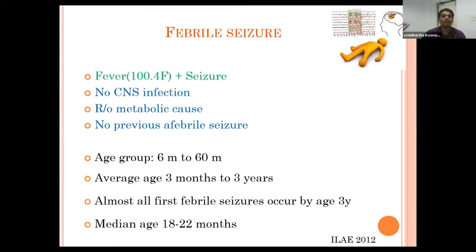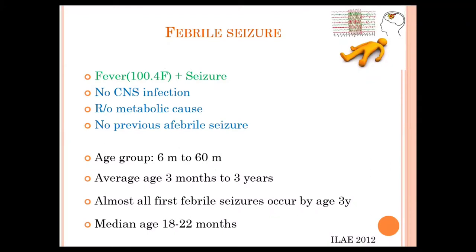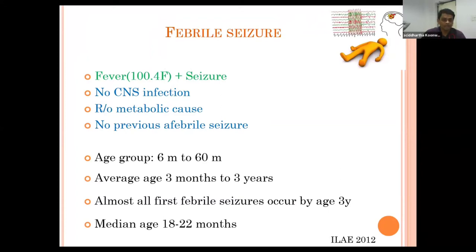Febrile seizure is defined as any seizure with fever more than 100.4 degrees Fahrenheit, according to ILAE 2012 classification. Importantly, there should be no CNS infection, no metabolic cause, and no other causes of seizure. The most common age group is six months to five years, average age is three months to three years, and almost all first febrile seizures occur by age three years.